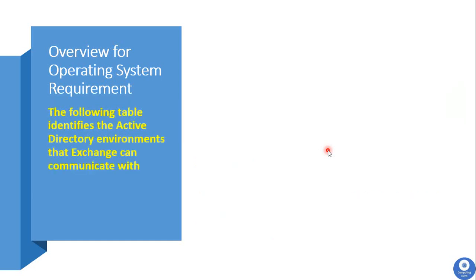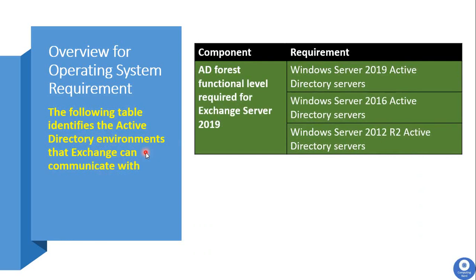Next, we will see the supported Active Directory environment that Exchange 2019 can communicate with. Your existing Active Directory forest functional level should be at a minimum of Windows Server 2012 R2, and Exchange 2019 can also communicate if your Active Directory is on Windows Server 2019. Your Active Directory plays a very important role with Exchange because Exchange Server is tightly integrated with your Active Directory environment.